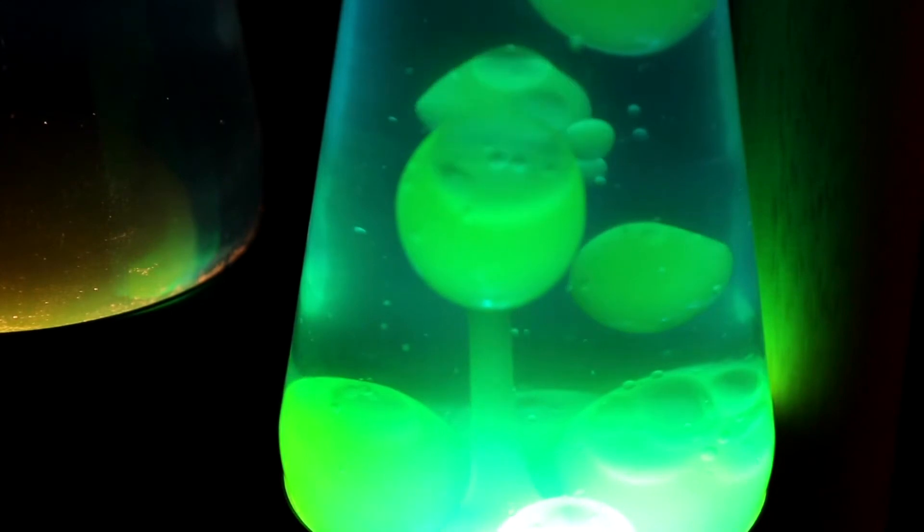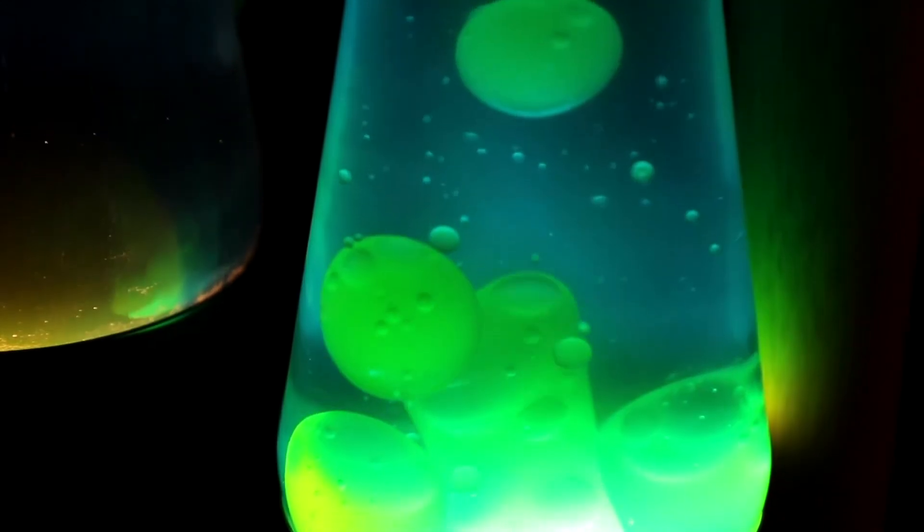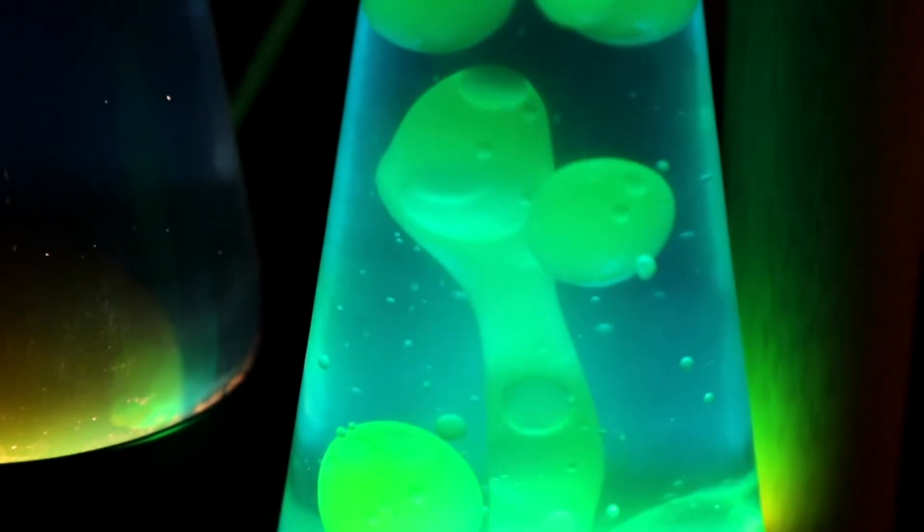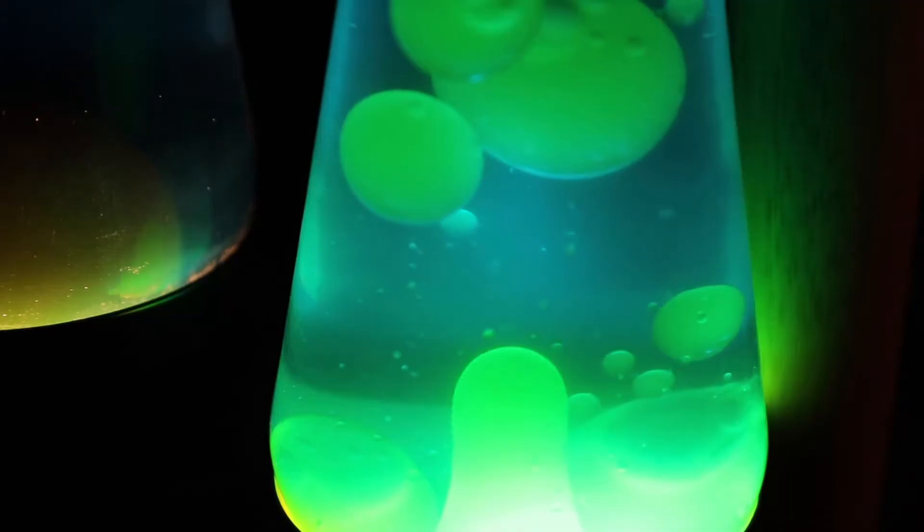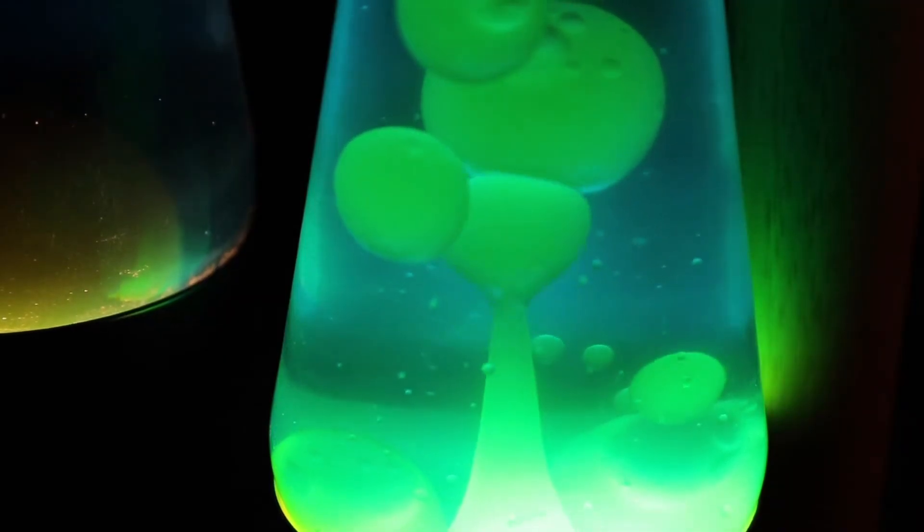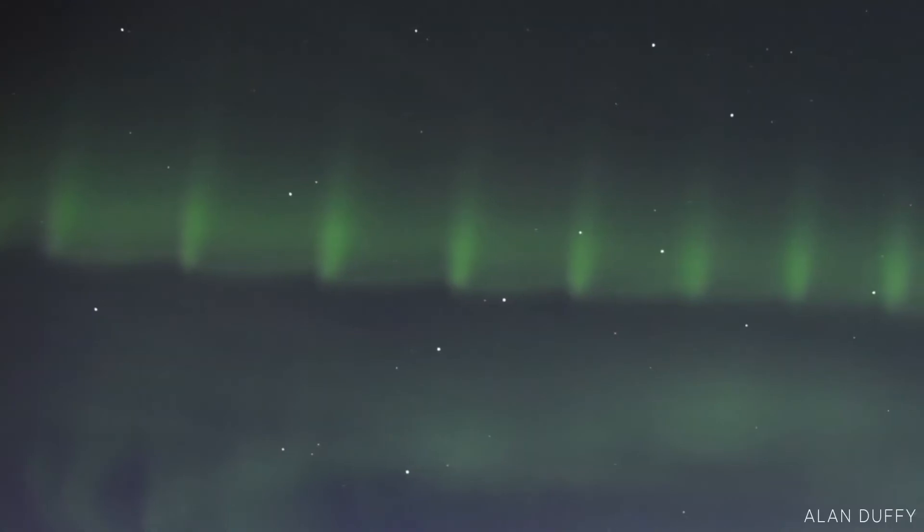Just like a lava lamp, the buoyancy between the bubbles and heavier plasma creates fingers of plasma about 2,500 miles wide that stretch down towards Earth, creating the distinct pearl necklace structure in aurora beads.